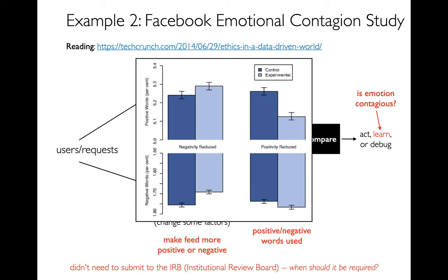Facebook wanted to see whether that could control how positive or negative people were when they made their own posts. No surprise: if you're exposed to positivity you become more positive, and if you're exposed to negativity you become more negative. From a learning perspective this is interesting, but there are huge ethical concerns. If a university had done this experiment they would have had to submit their proposal to the IRB — the Institutional Review Board. Facebook didn't have to do that.